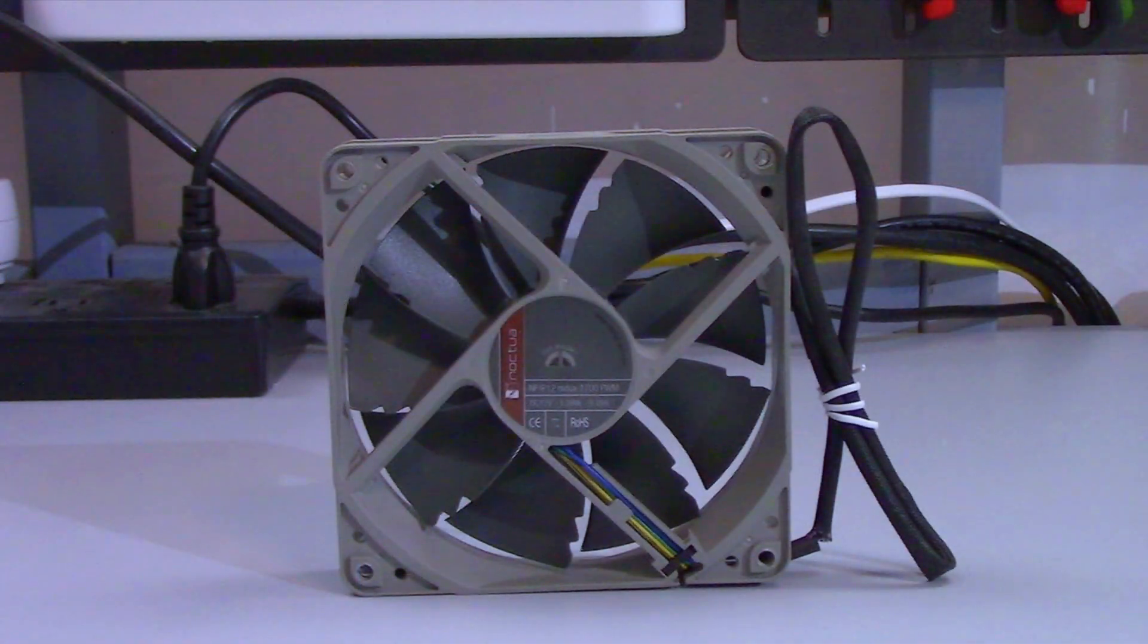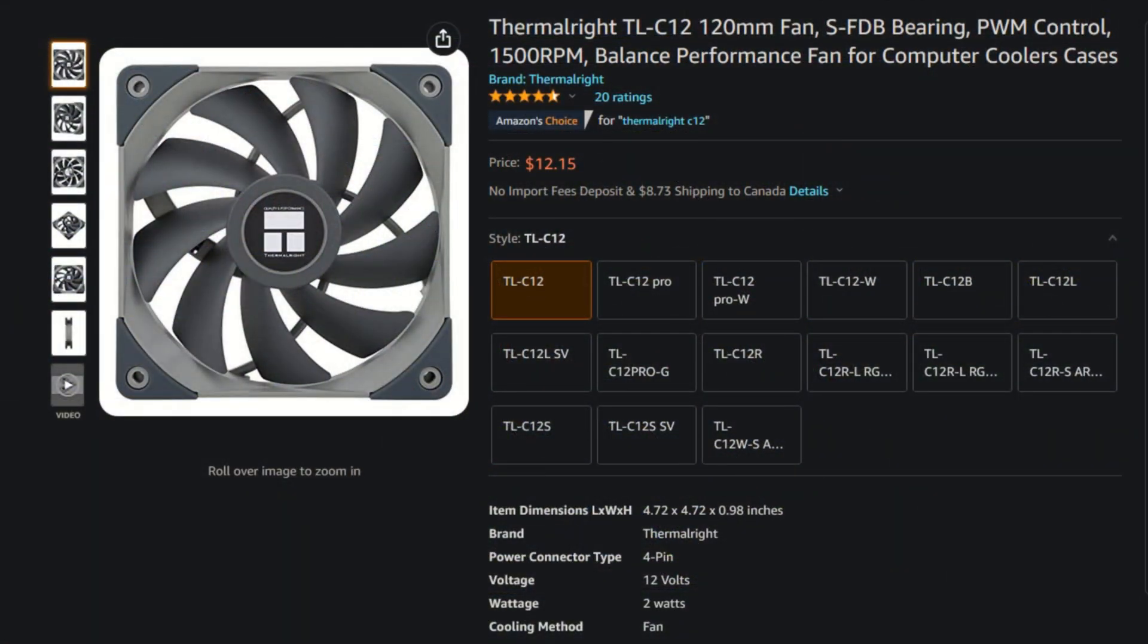So what do I think of the Noctua NF-P12 1700 PWM Redux? All in all, it's an okay fan. It performs pretty okay. It has a pretty okay price. But the issue I have with this fan is it looks incomplete. And that's because Noctua doesn't actually include the anti-vibrational pads with the fan. So when you compare the NF-P12 with the C12 from Thermalright, not the Pro, but just the C12, the performance should be nearly identical. But the C12 comes with the anti-vibrational pads and is two to three dollars less.